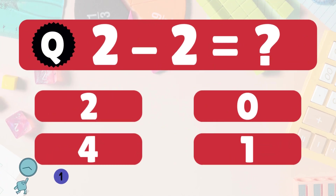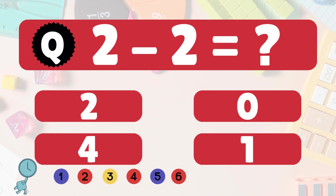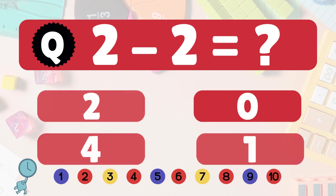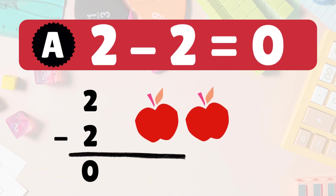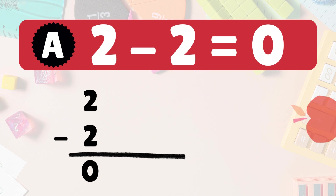2 minus 2 equals what? 2 minus 2 is 0. Here we have 2 apples. Take 2 away. No apples left. So 2 minus 2 is 0.